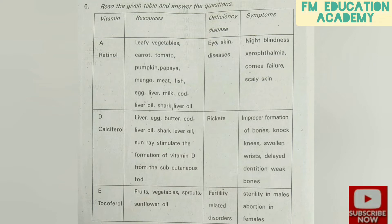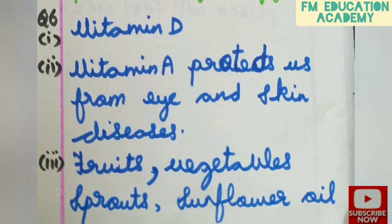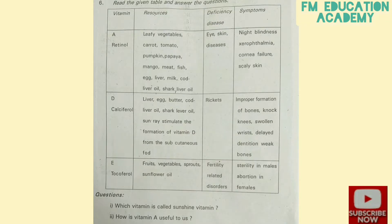First bit: which vitamin is called the sunshine vitamin? In the resources column, sunlight is given as a resource, so deficiency of sunlight means deficiency of vitamin D. Answer: vitamin D.